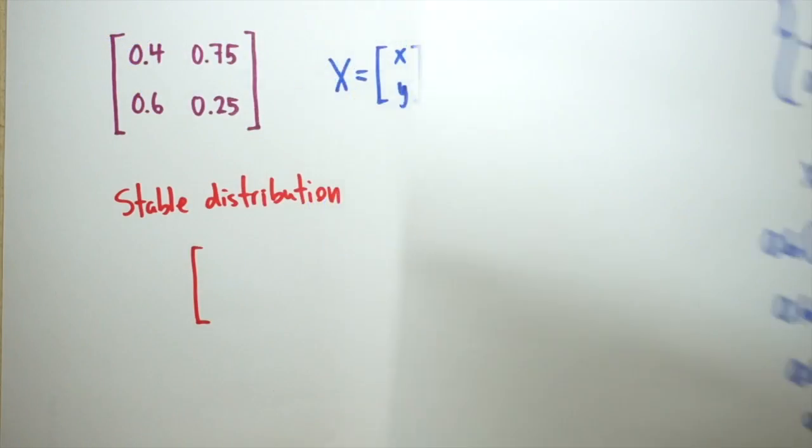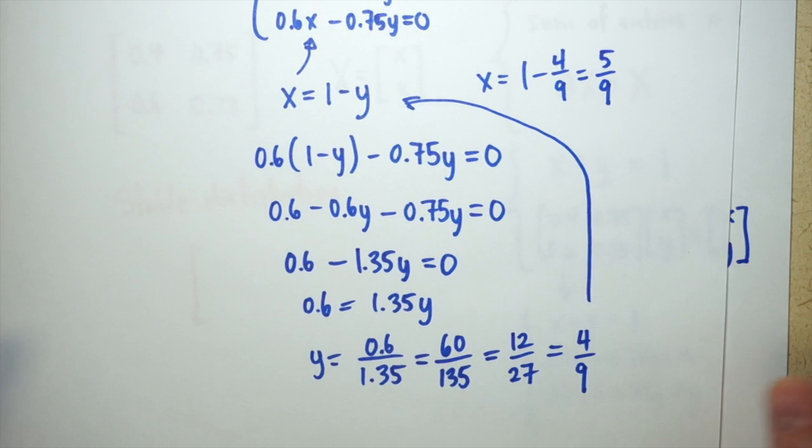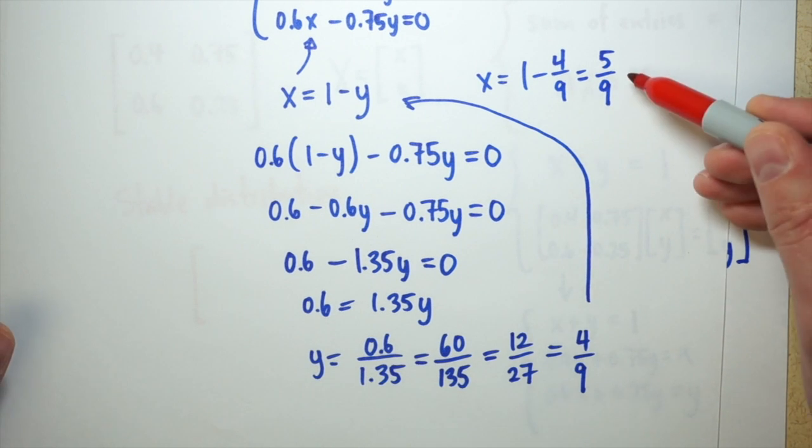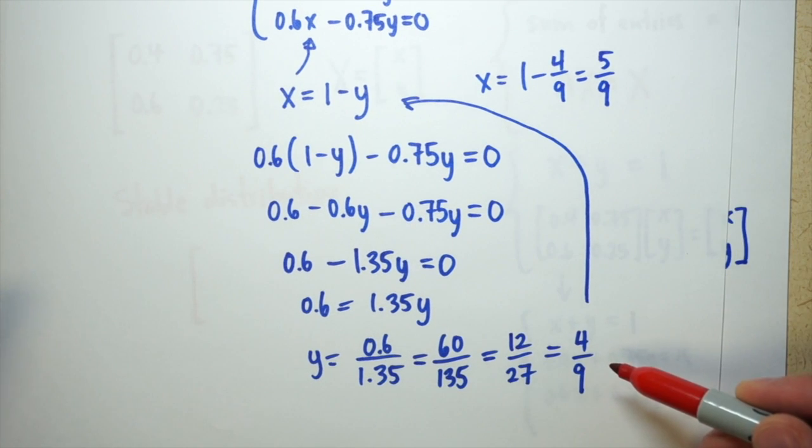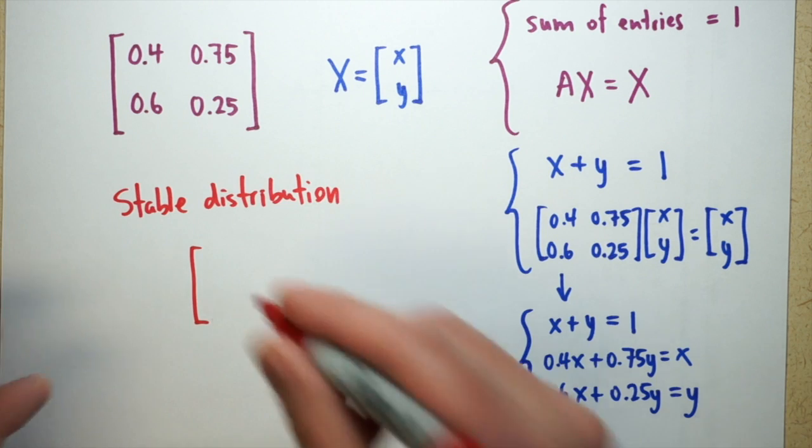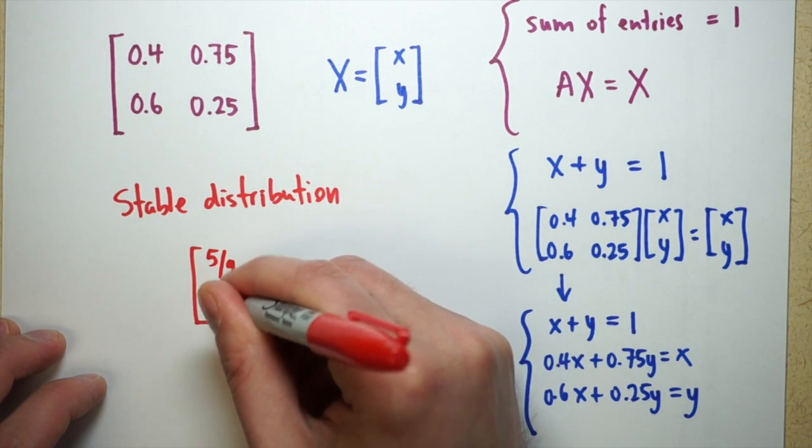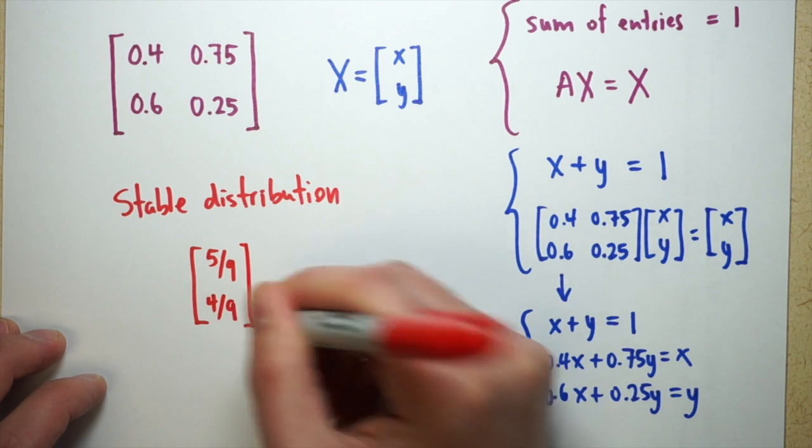Once we have this information, the stable distribution and the stable matrix is really easy to find. We have our x and our y value from solving the system of equations, so our stable distribution is nothing more than that x and that y value. It's 5 ninths and 4 ninths in this case.